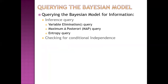For querying the Bayesian model for information, we can do an inference query by three options: variable elimination query, maximum-a-posteriori query or MAP query, and entropy query. We can also check for conditional independence.